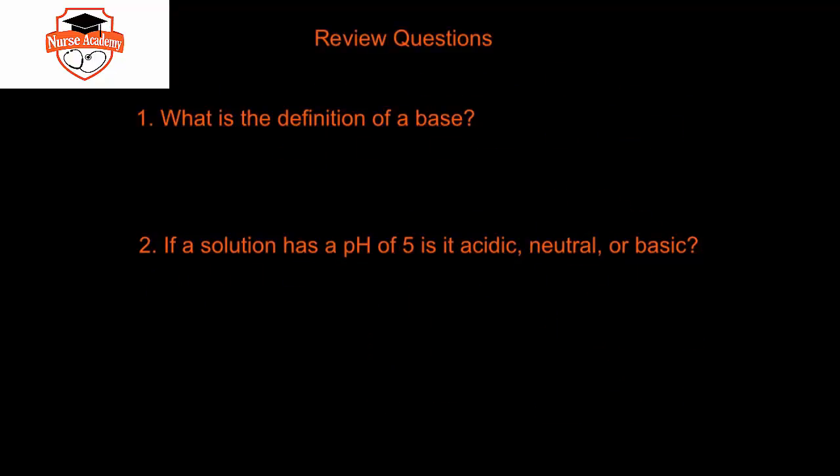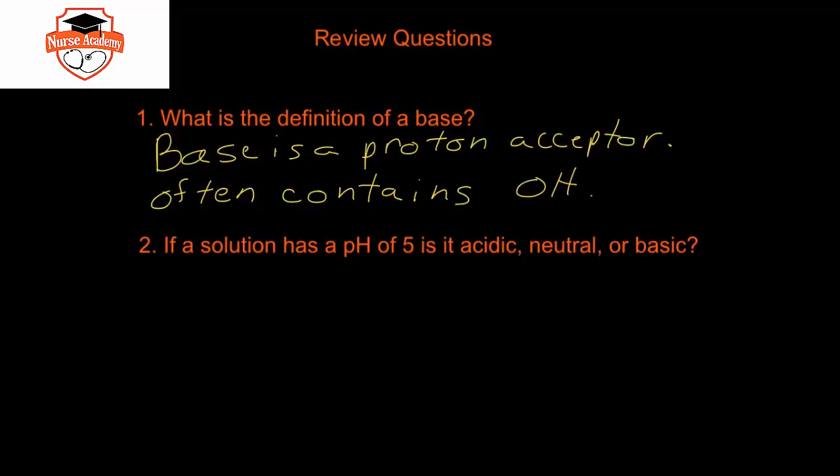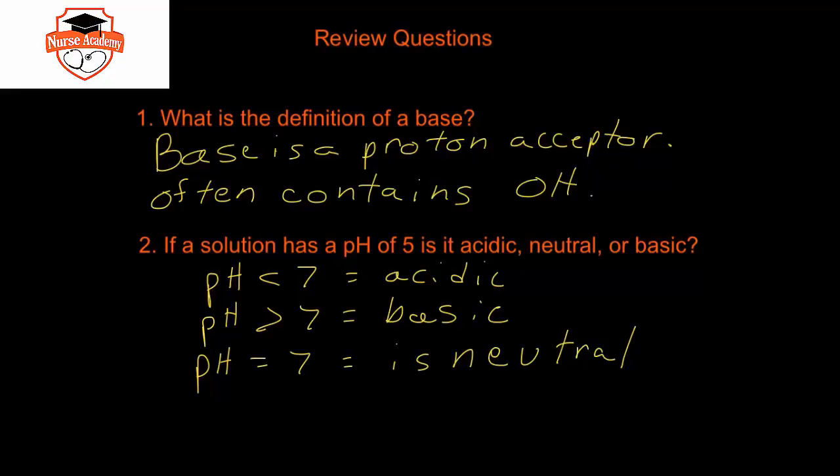Here are this video's review questions. Please take some time, pause the video, and answer the questions. A base is a proton acceptor often containing, but not always, hydroxide. In the second question, if a solution has a pH of 5, is it acidic, neutral, or basic? A pH less than 7 is acidic, a pH greater than 7 is basic, and a pH equal to 7 is neutral. So a pH of 5 is less than 7, so it is acidic.